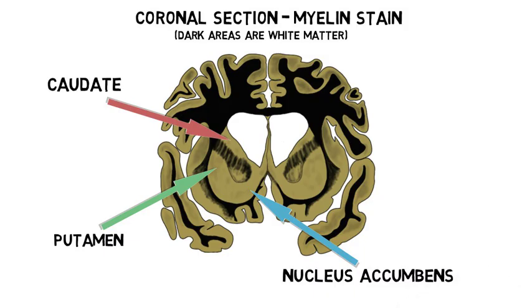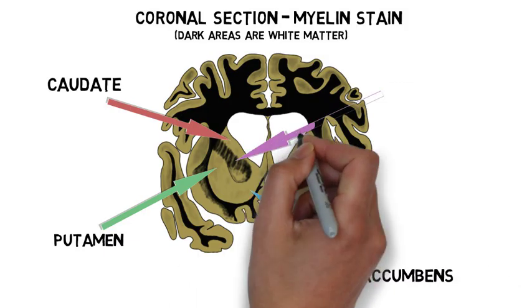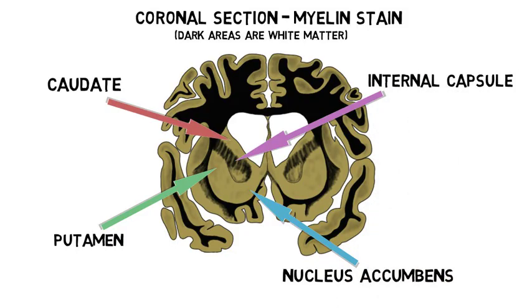The caudate and putamen are separated from one another by a white matter tract called the internal capsule, but there are many strands of gray matter that cross the internal capsule, giving the structure a striped appearance. This is why the term striatum, Latin for striped, is used to describe the region.